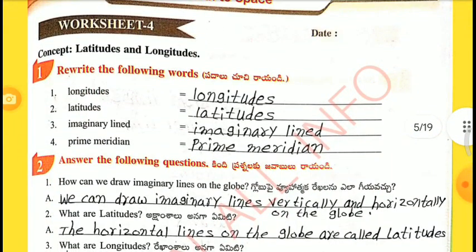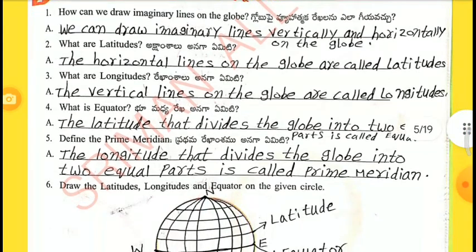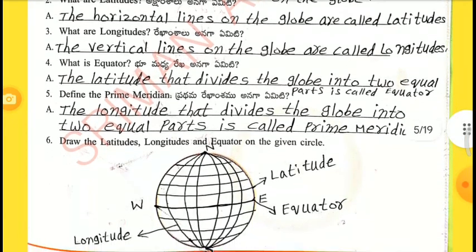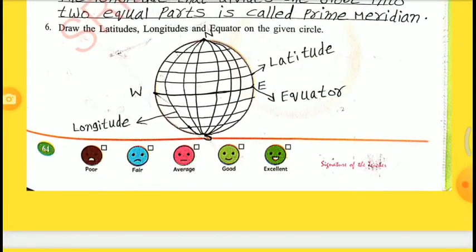Worksheet 4. Concept: Latitudes and Longitudes. Relate the following words: Longitudes, Latitudes, Imaginary line, Prime Meridian. Answer the following: How can we draw imaginary lines on the globe? We can draw imaginary lines vertically and horizontally on the globe. What are latitudes? The horizontal lines on the globe are called latitudes. What are the longitudes? The vertical lines on the globe are called longitudes. What is equator? The latitude that divides the globe into two equal parts is called equator. Define the prime meridian: the longitude that divides the globe into two equal parts is called prime meridian. Draw the latitudes, longitudes, and equator on the given diagram.